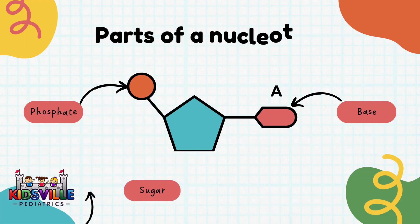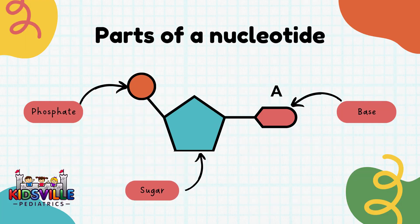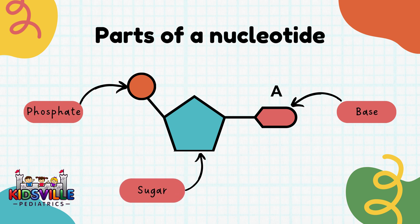What are the parts of a nucleotide? First, the phosphate; second, sugar; and lastly, the base.